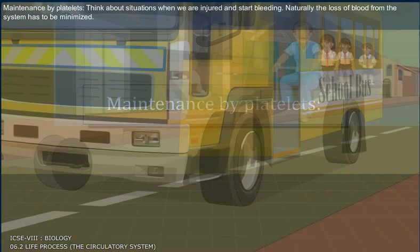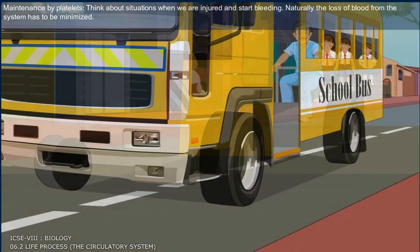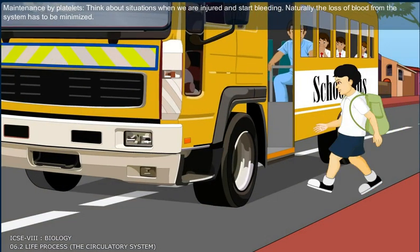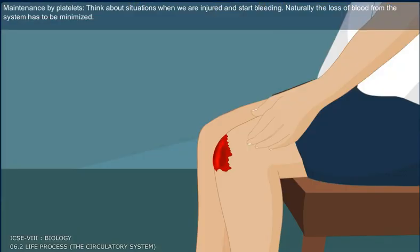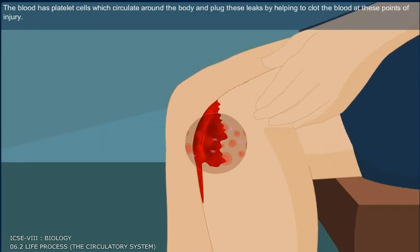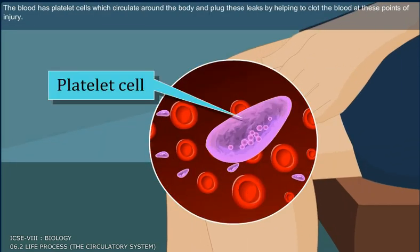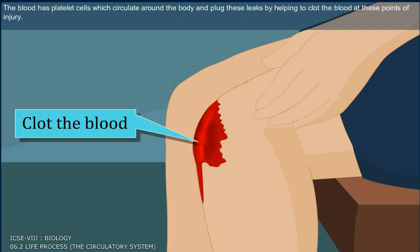Maintenance by platelets. Think about situations when we are injured and start bleeding. Naturally, the loss of blood from the system has to be minimized. The blood has platelet cells which circulate around the body and plug these leaks by helping to clot the blood at these points of injury.